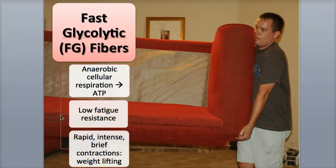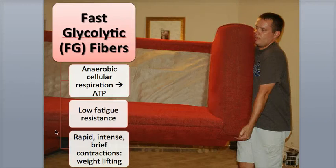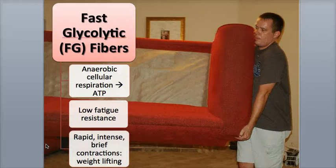These fibers are more commonly found in the muscles of the shoulder and arms and are used for brief, intense anaerobic activities such as weightlifting, throwing, or moving heavy furniture. The diameter and strength of the FG fibers can also increase during strength training through weightlifting due to the higher levels of muscle protein synthesis. This leads to an increase in overall muscle size and mass called hypertrophy.